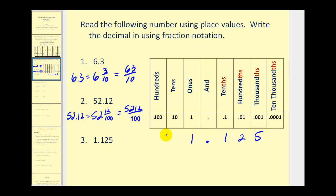In our last example, number three, we would have one and 125 thousandths. So here's the decimal as a mixed number. And then as a fraction, it would be 1,125 thousandths.